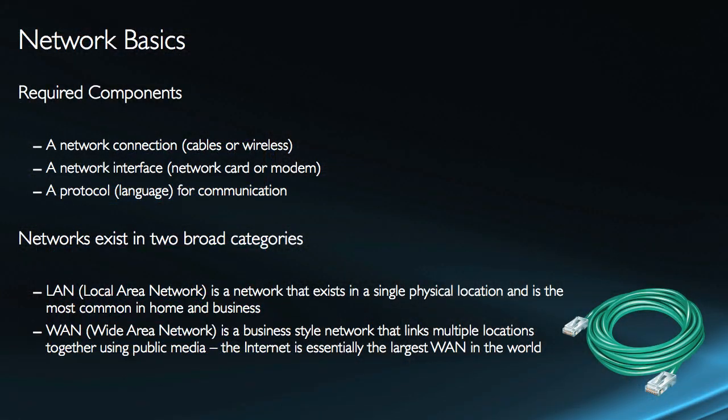Wireless works by using radio frequencies to communicate with something known as a wireless router or a wireless access point. But you still need that actual physical connection, which comes through what's known as a network interface card, or NIC, or a modem. The modem is used when connecting via a phone line, and the NIC is used when connecting to a network. You would still call it a NIC even if it's wireless — it's just called a wireless network interface card.